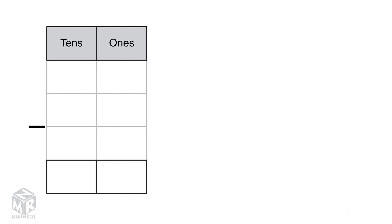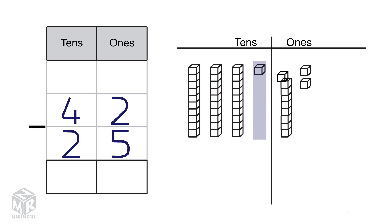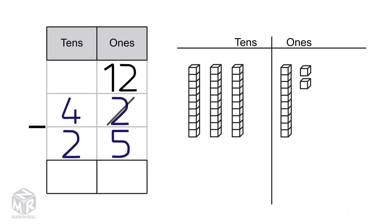Let's try another example: 42 minus 25. Let's draw it out. 42 has four 10s and two 1s. We can't subtract 5 from 2, so we regroup one 10 as 10 1s. Now we have 12 1s, so we cross out the 2 and put 12 at the top. We also have three 10s, so we cross out the 4 and put 3 at the top.